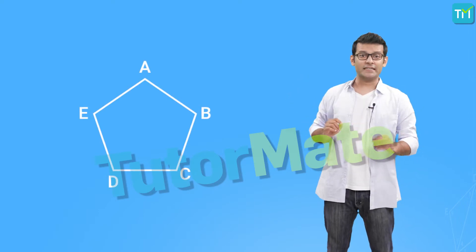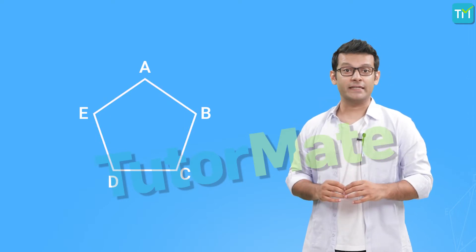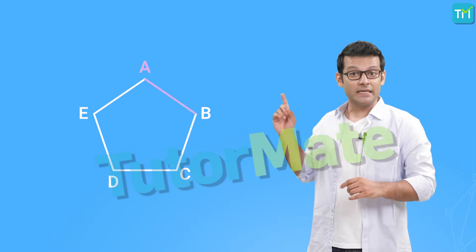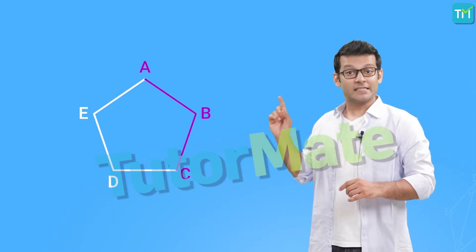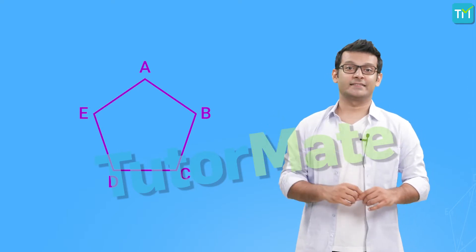We can see that it has five line segments that make it up. So, we say it has five sides which are the sides AB, BC, CD, DE, and EA.